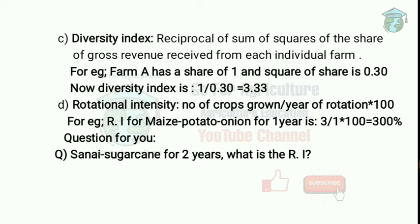Rotational Intensity measures how much you are rotating your crops. The formula is: number of crops grown divided by years of rotation, multiplied by 100. For example, for maize, potato, and onion in one year — three crops over one year — that gives 3 divided by 1 into 100, which equals 300%.